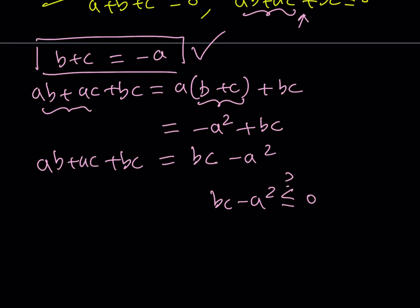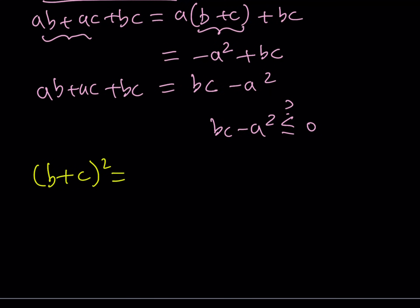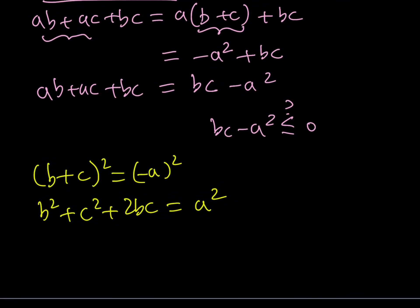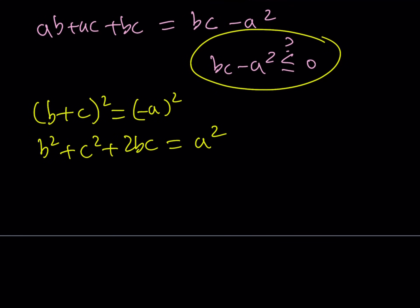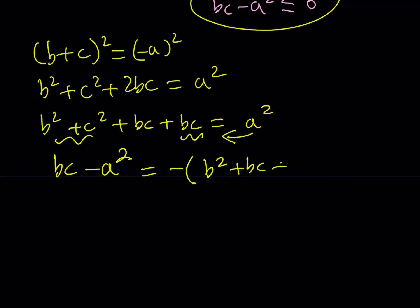Since b plus c equals negative a, I'll square both sides to get b squared plus 2bc plus c squared equals a squared. I'm trying to show bc minus a squared is less than or equal to zero. Rearranging gives bc minus a squared equals negative (b squared plus bc plus c squared), where I bring a squared to one side and everything else to the other with a negative sign.